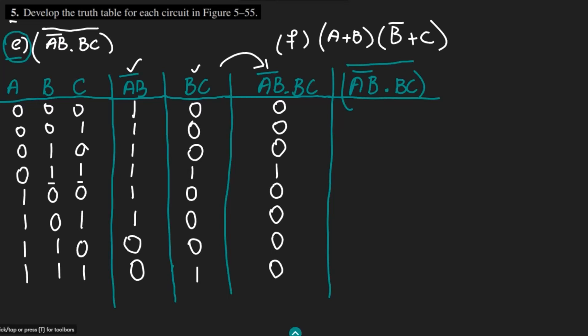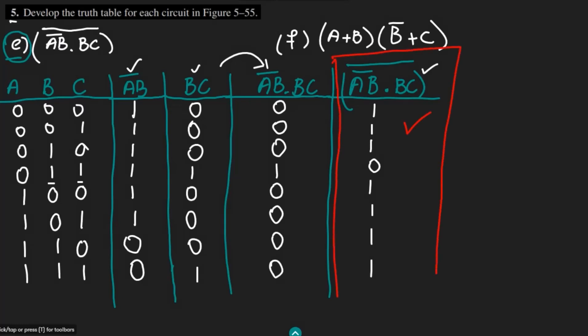Multiplying AB complement and BC together: if any one is 0 the result is 0, giving 0 0 0 1 0 0 0 0 0. To find the complement of this expression, I make zeros into 1s and 1s into 0s, giving 1 1 1 0 1 1 1 1 1. That is the procedure, and this table is the answer for part e.